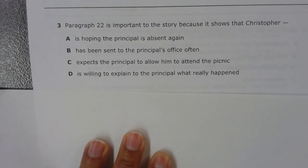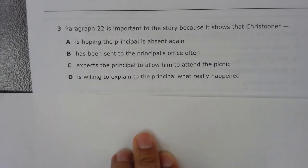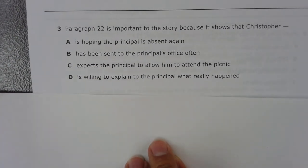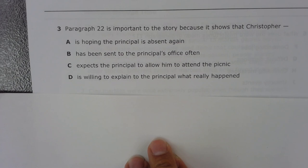Number 3. Paragraph 22 is important to the story because it shows that Christopher A. Is hoping the principal is absent again. B. Has been sent to the principal's office often. C. Expects the principal to allow him to attend the picnic. D. Is willing to explain to the principal what really happened.